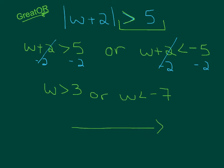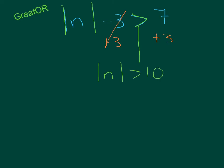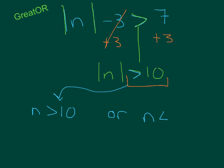On a graph it would look like we have 3 and negative 7 — greater than 3, less than negative 7. In this next example, we once again have a greater than inequality, but notice the absolute value is not by itself on one side. So our first step is to add 3 to the other side before we can create a compound inequality, giving us absolute value of n is greater than 10. Because we still have a greater than inequality, we create an or statement: n is greater than 10, or — changing both — n is less than negative 10.